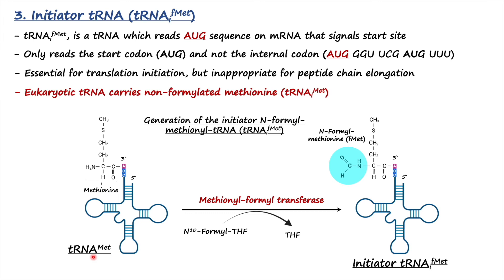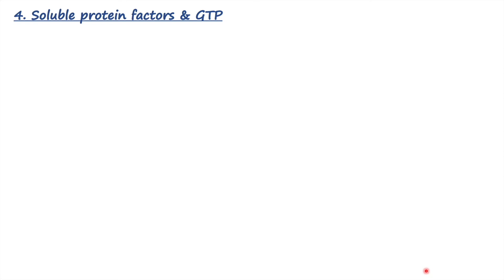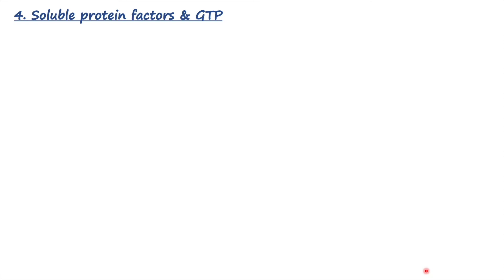One important distinction: eukaryotic initiator tRNA does not carry formyl-methionine — it carries non-formylated methionine. The key difference is that the eukaryotic initiator tRNA has an 'i' designation signifying initiation, and therefore only recognizes the initiation codon. This is the main difference between eukaryotic initiator tRNA and prokaryotic initiator tRNA.